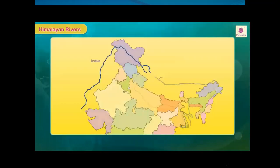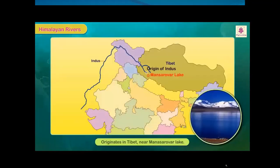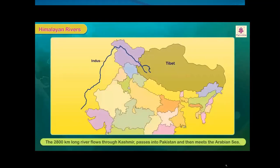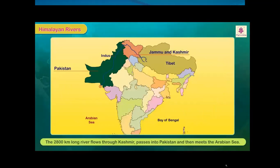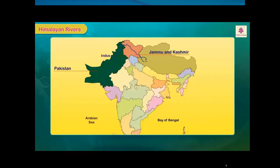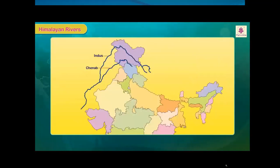The Indus originates in Tibet near Mansarovar Lake. The 2,800 km long river flows through Kashmir, passes into Pakistan and then meets the Arabian Sea. The Indus enters India through Jammu and Kashmir. Its major tributaries are Chenab, Jhelam, Ravi, Satlaj and Beas.